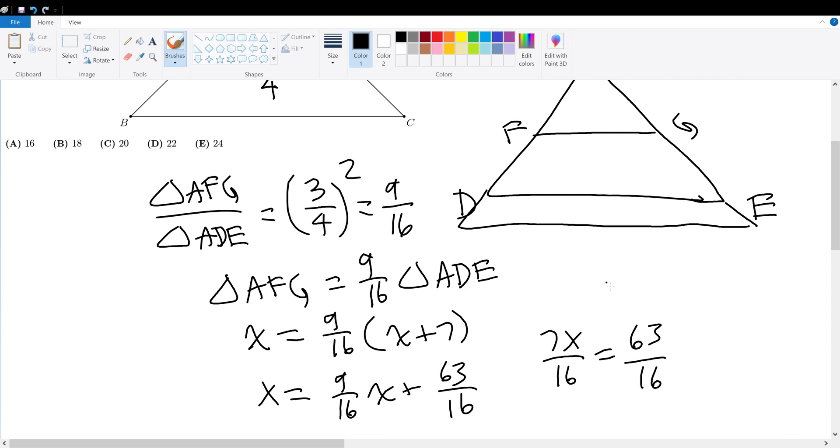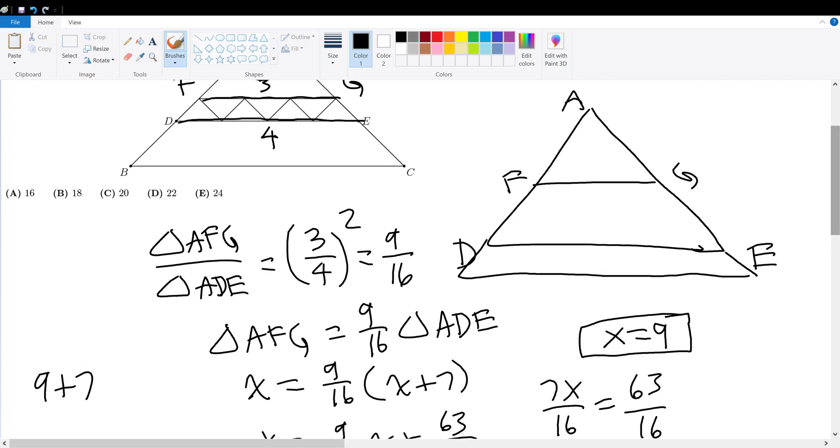Then that means X must therefore equal to 9. If X is equal to 9, then that means 9 plus 7 would be the area of, if I were to scroll up a little bit for the visual, that would be the area of this entire shape. Because X plus 7 is defined to be the area of ADE given previously. So 9 plus 7 is 16.